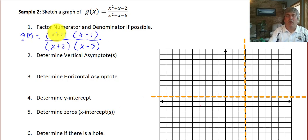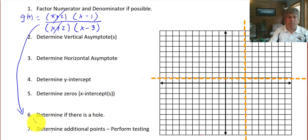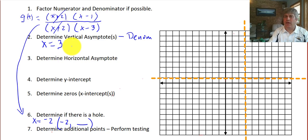Let's go to sample two — a little bit more complicated graph. We want to factor our numerator and denominator, which we have done: (x+2)(x-1) over (x+2)(x-3). We have a factor of (x+2) in both the numerator and denominator which would cancel, which means we are going to have a hole at x equals negative 2. We want to determine our vertical asymptote — we're not going to use the (x+2) factor because that's our hole. So x can't equal 3 because that would make our fraction undefined, so x = 3 is our vertical asymptote, and I've filled that in.